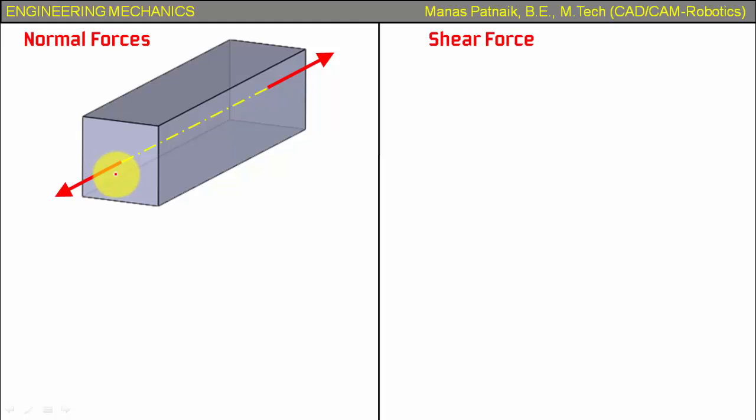Now basically the axial force is such that it acts along the axis, that's it. Now if you watch carefully, if I can make an axis over here something like this, if you watch carefully this axial force is making a 90 degree angle with the vertical axis of the cross-section